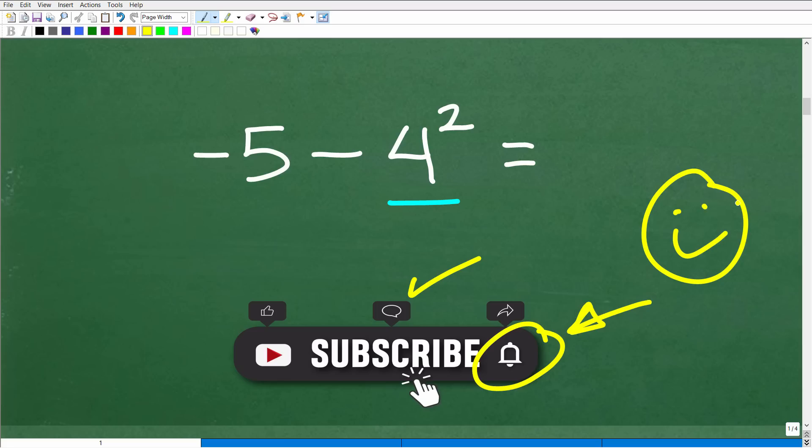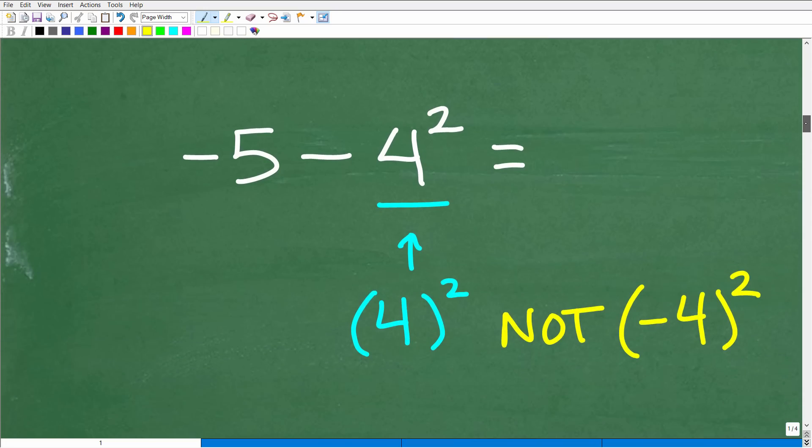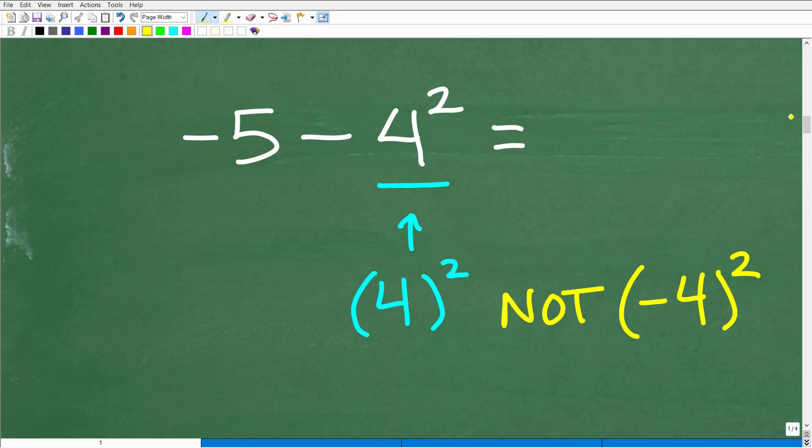Okay. Now, before I show you this, this is the part of the problem where a lot of students will tend to make an error. Let's go ahead and take a look at that error right now. All right. So negative five minus four squared. So this right here, the power part is four squared. That's what we need to do. Not negative four squared. Okay? And you might be surprised, but a lot of students think that this subtraction sign is in front of this negative four. Okay? That's just a common, you know, misunderstanding.